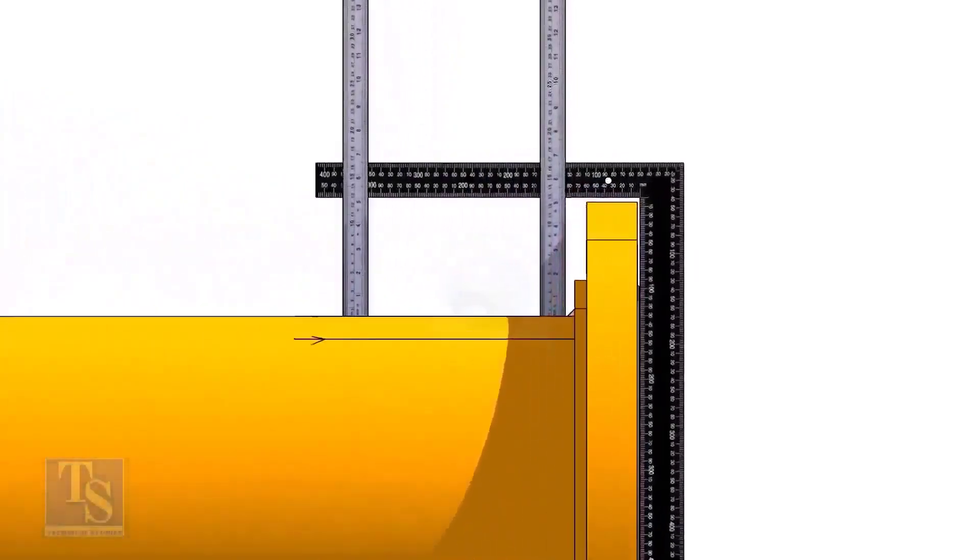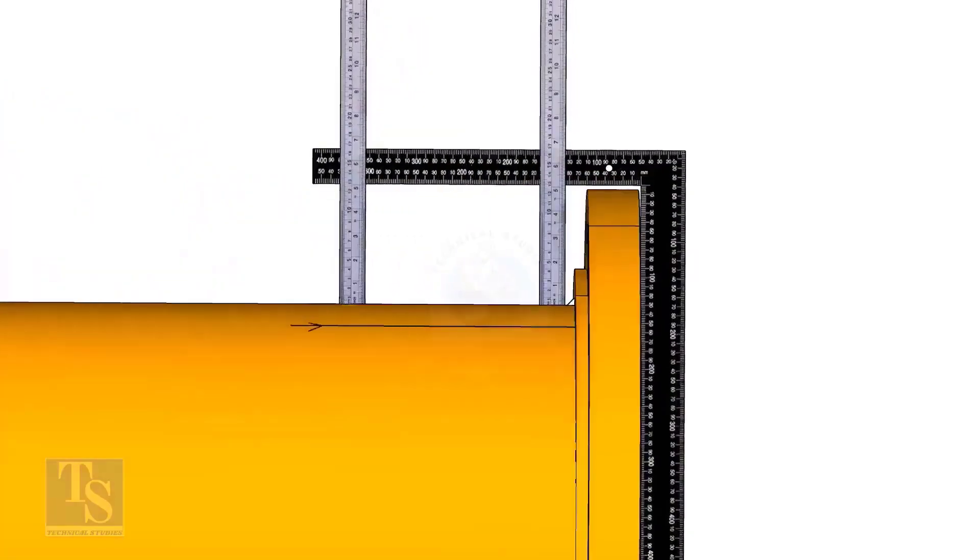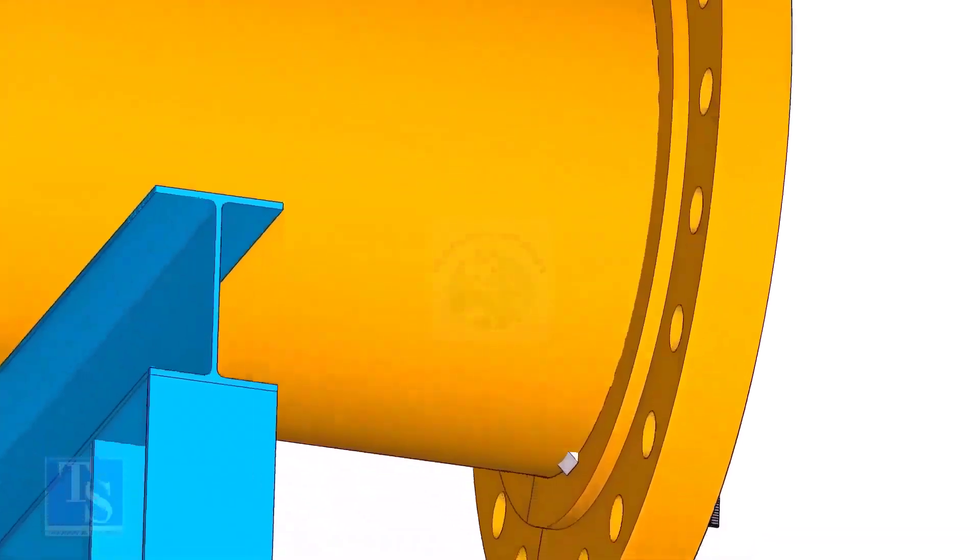Tack weld on the top of the pipe with the flange and check the squareness. If correct, tack weld at the bottom side also.